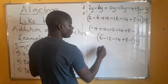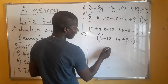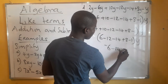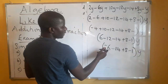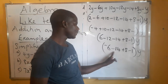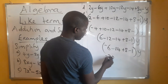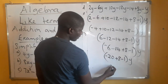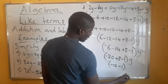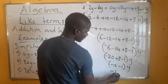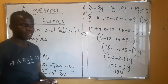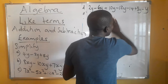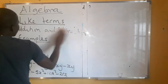Then we subtract 6 from 12, getting 6, which keeps the sign of the bigger number — minus. So we have minus 6 minus 14 plus 8 minus 1 times y. These two have the same sign, so when the sign is the same you add them and keep the sign: minus 20, plus 8 minus 1. We get minus 12, minus 1 — the sign is the same so we add: minus 13y. Minus 13y is our answer.